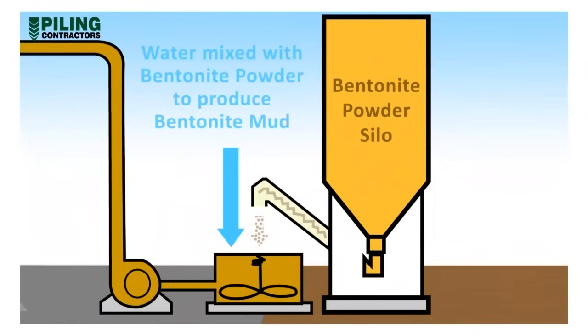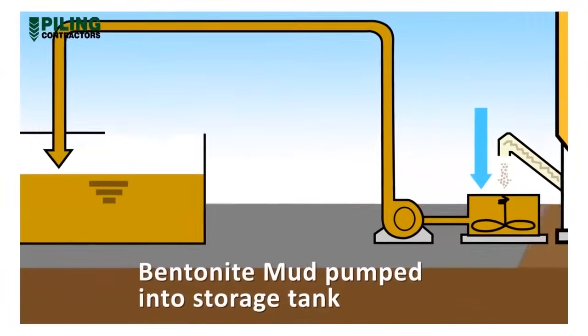Typically, bentonite powder in bulk or bagged form is added to water and rapidly mixed in a colloidal mixer to produce the desired concentration of bentonite mud.